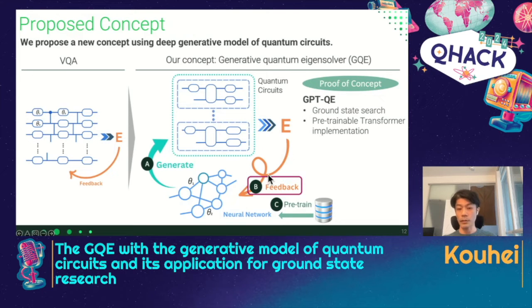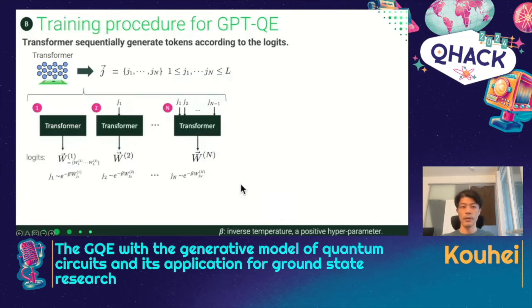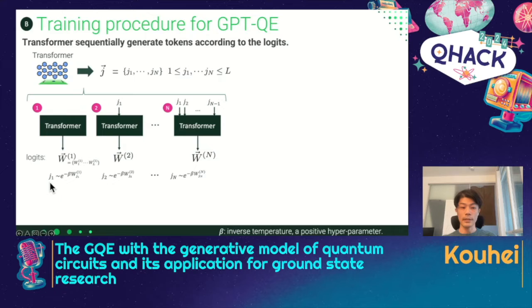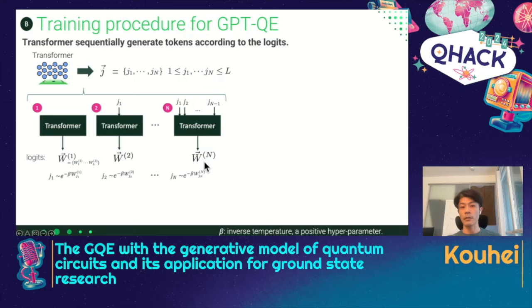This is the process to generate quantum circuits using a transformer. Then how do we calculate the feedback to the neural network? To see how we calculate the feedback to the transformer, we need to see how the transformer generates each token in detail. The process of generating a sequence of tokens is a step-by-step process. In the first step, without any input, the transformer generates logits, which is a vector, and according to the logits, the first token J1 is sampled with a certain probability. In the second step, J1 is used as input and the logits are calculated as output. According to the logits, the second token is sampled. By repeating this process we can get the sequence of tokens, which is mapped to the sequence of circuit components — a quantum circuit — and we can calculate the corresponding energy using the quantum device.